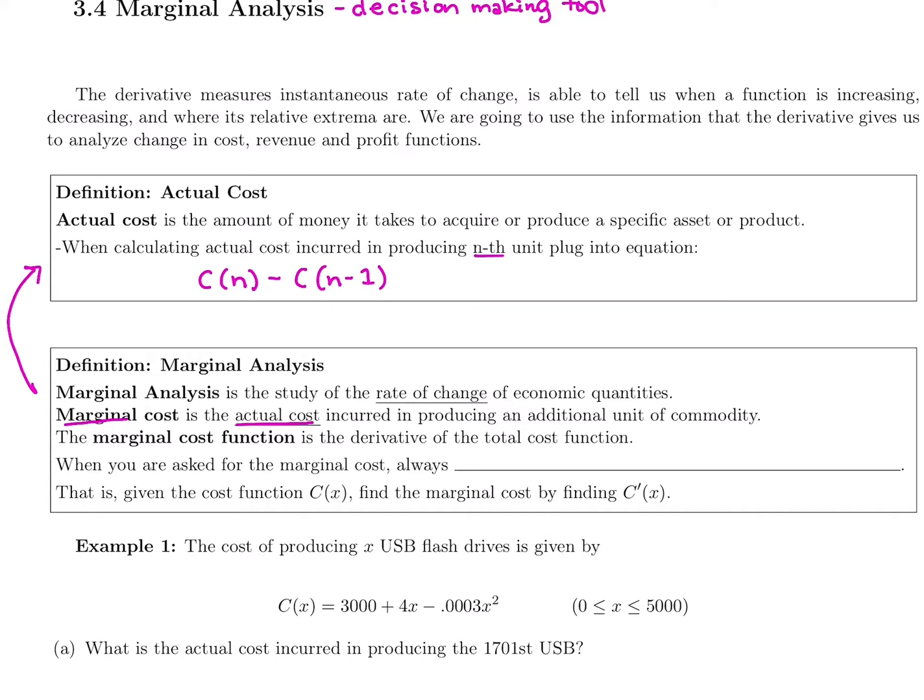If we were interested in finding the actual cost for that 50th unit, we would plug into marginal cost. We'd plug in 49 because it always estimates the next unit. So C'(49) would estimate the actual cost for the 50th unit. An additional unit of commodity, always the next unit.